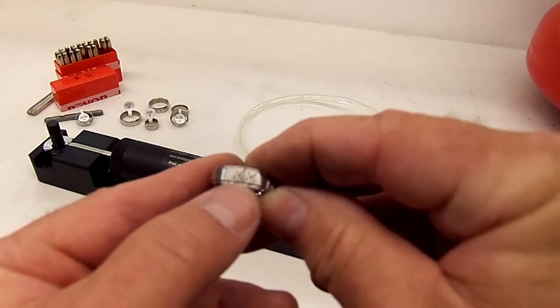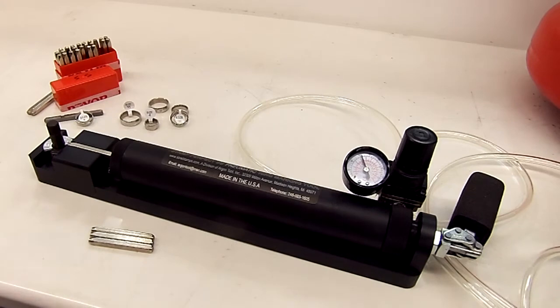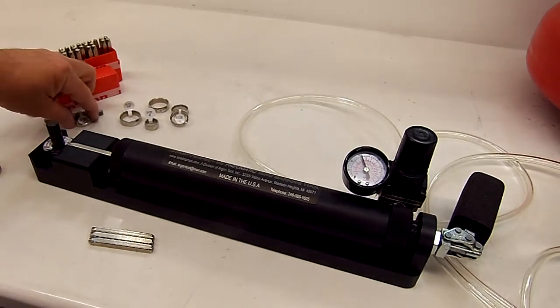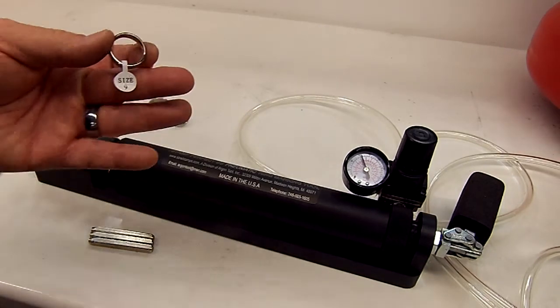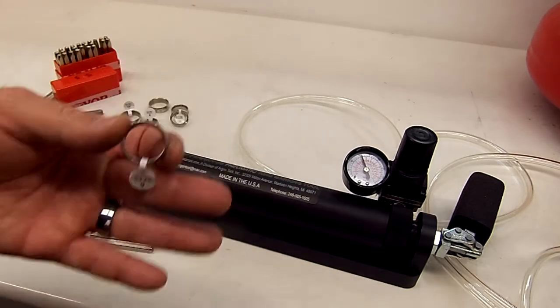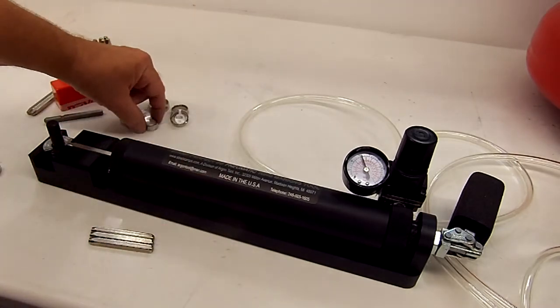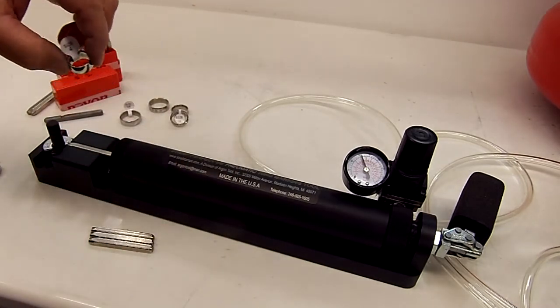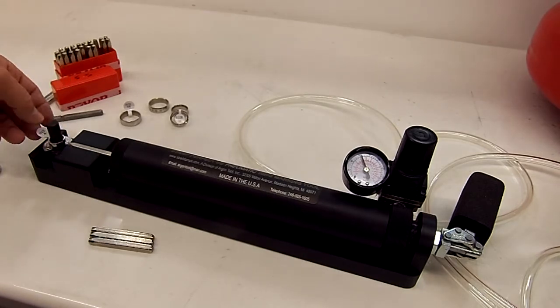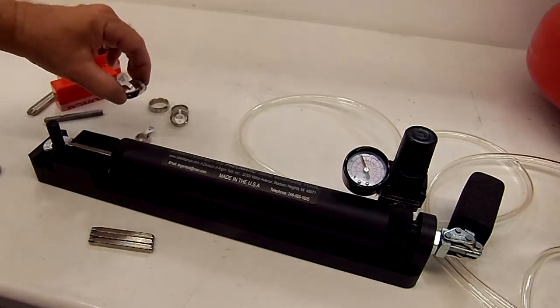So now that we have it set up and we're ready to mark, I'll show you how fast it is to mark a name. This is a size 9 ring, and the machine will go from size 4, that fits on the height adjustment screw, to 16.